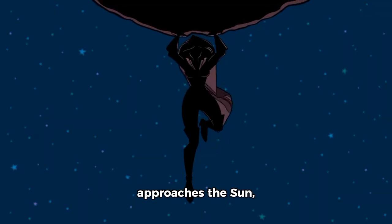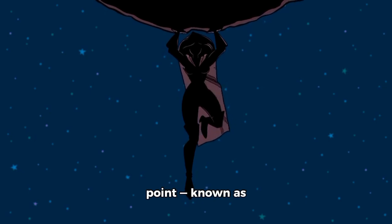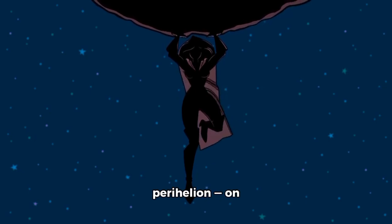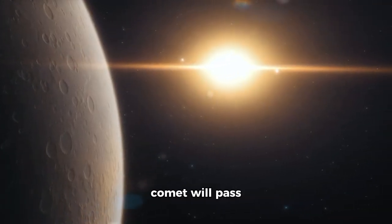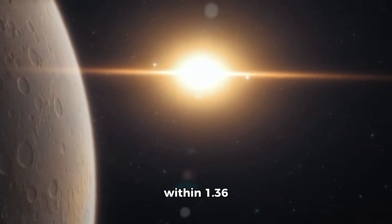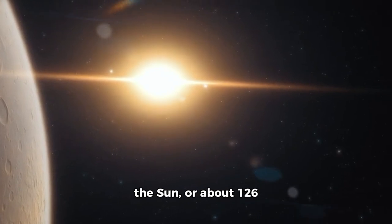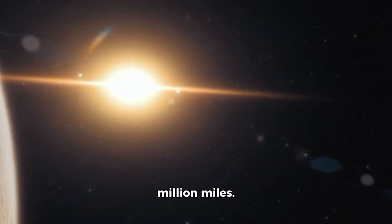As 3i Atlas approaches the sun, it is expected to reach its closest point, known as perihelion, on October 29, 2025. During this time, the comet will pass within 1.36 astronomical units of the sun, or about 126 million miles.